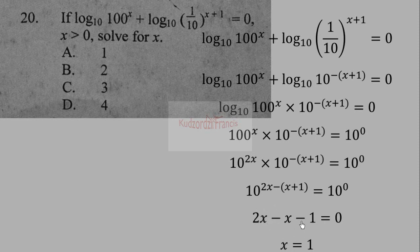Simplifying, 2x − x = x, and −1 becomes 1, so x = 1. The correct answer is A.